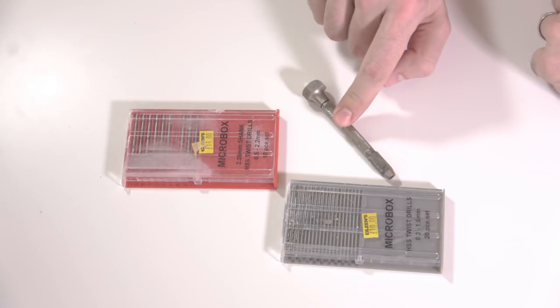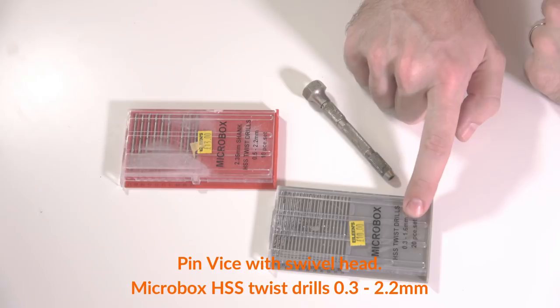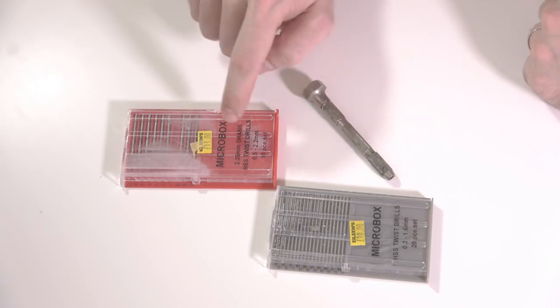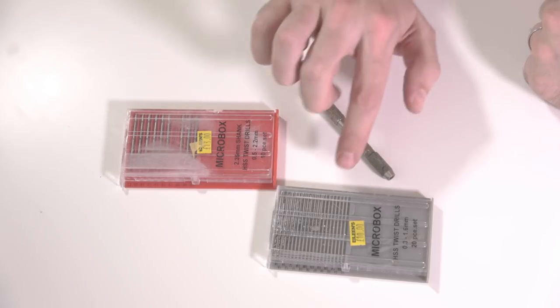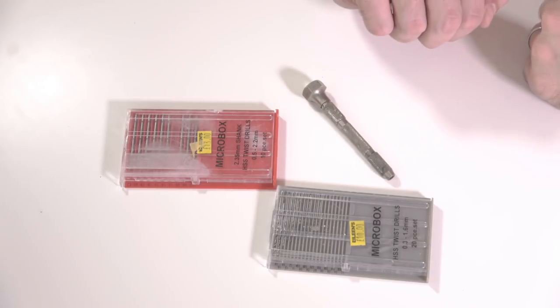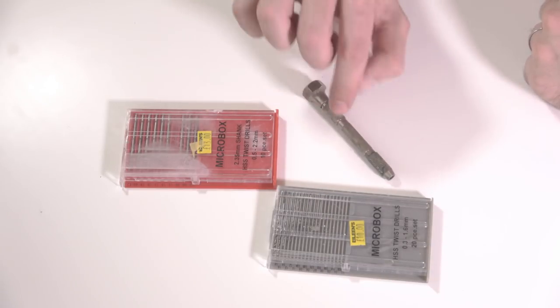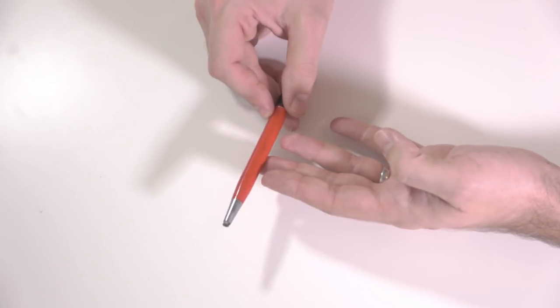Next for your essential kit list is a pin vise and a selection of drill bits. I've got from 0.3 to 1.6 there, and then from 0.5 to 2.2 there. The smaller ones do tend to break occasionally, so you will need to buy replacements. They're almost like consumables really, but essential that you've got a pin vise and miniature drills.